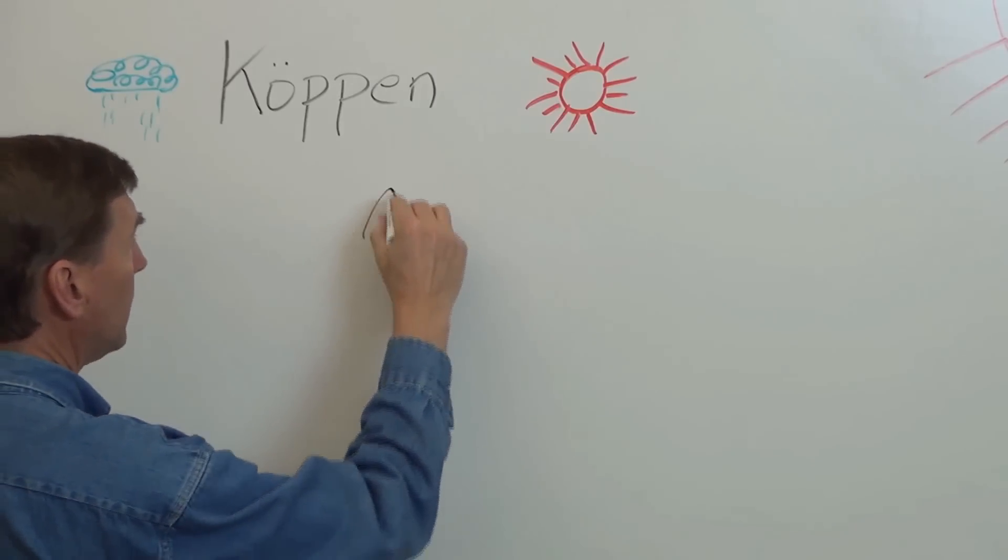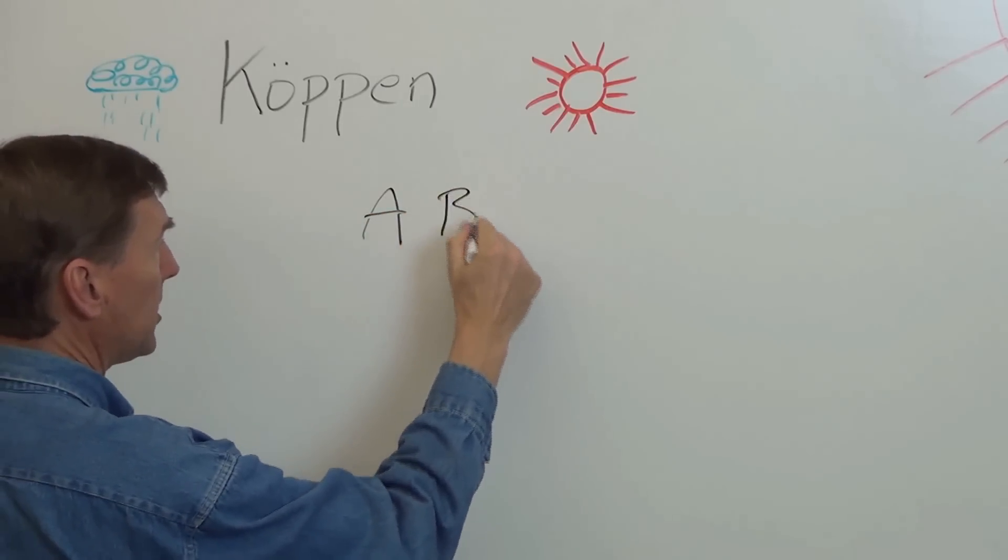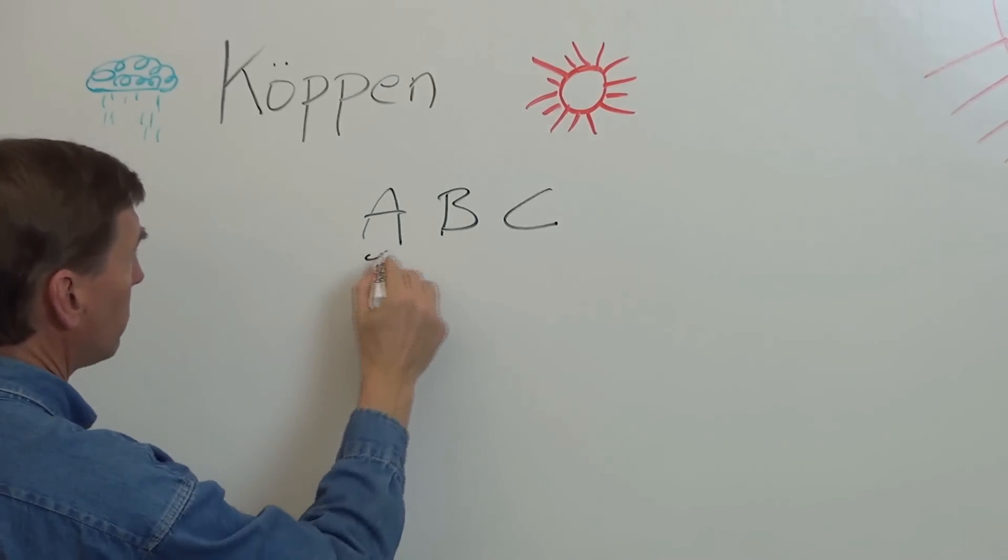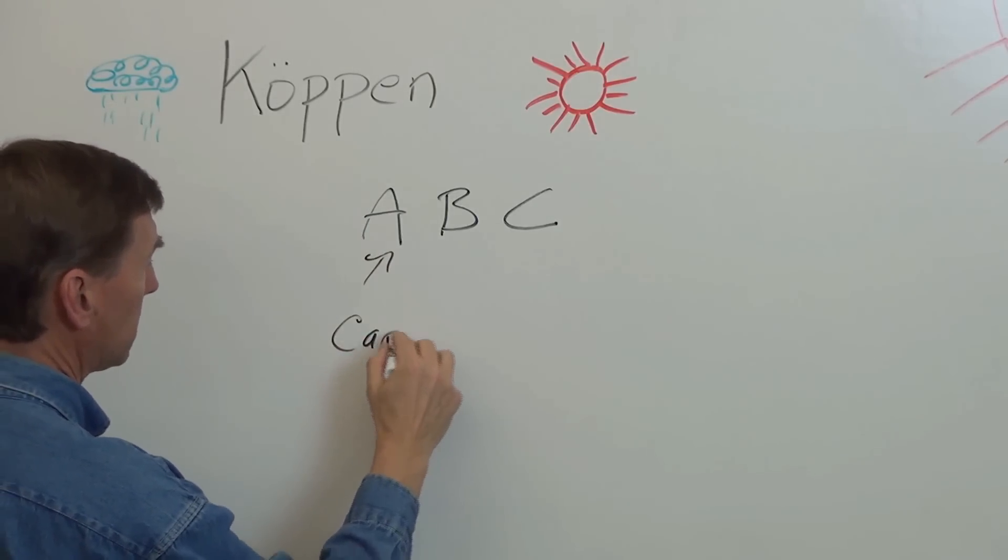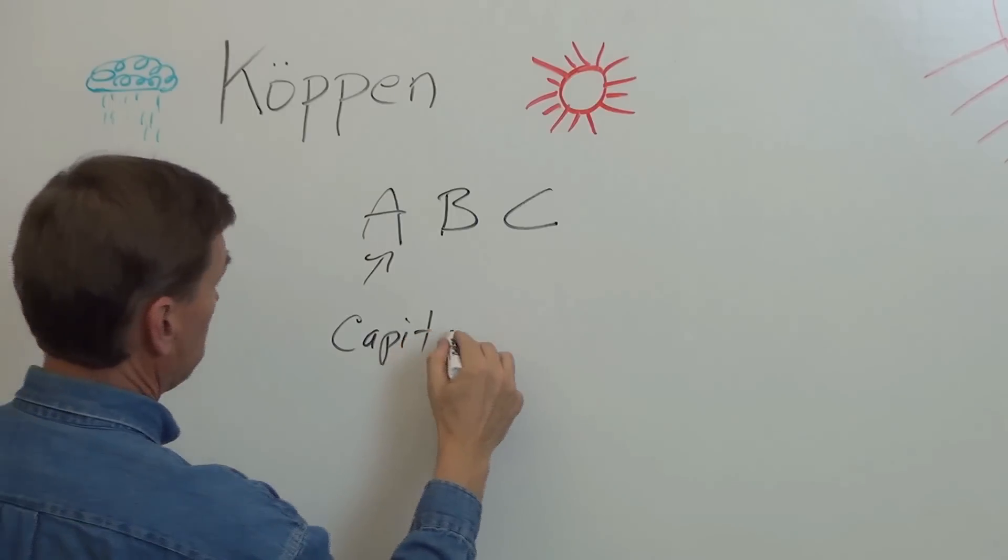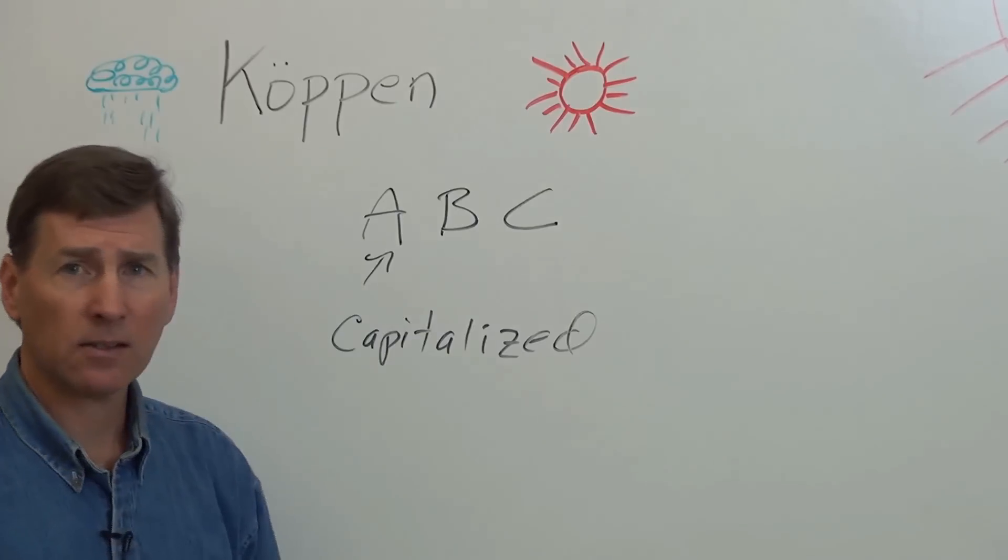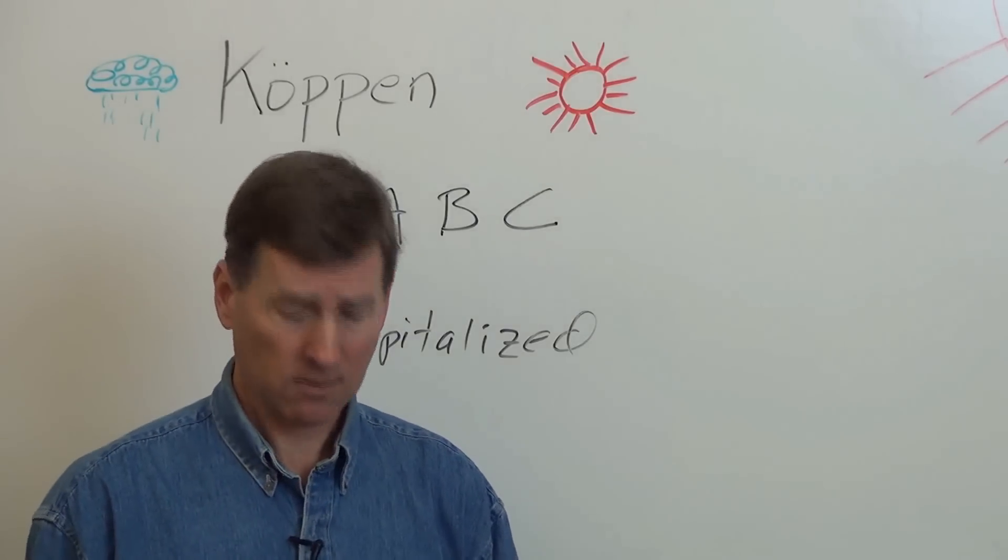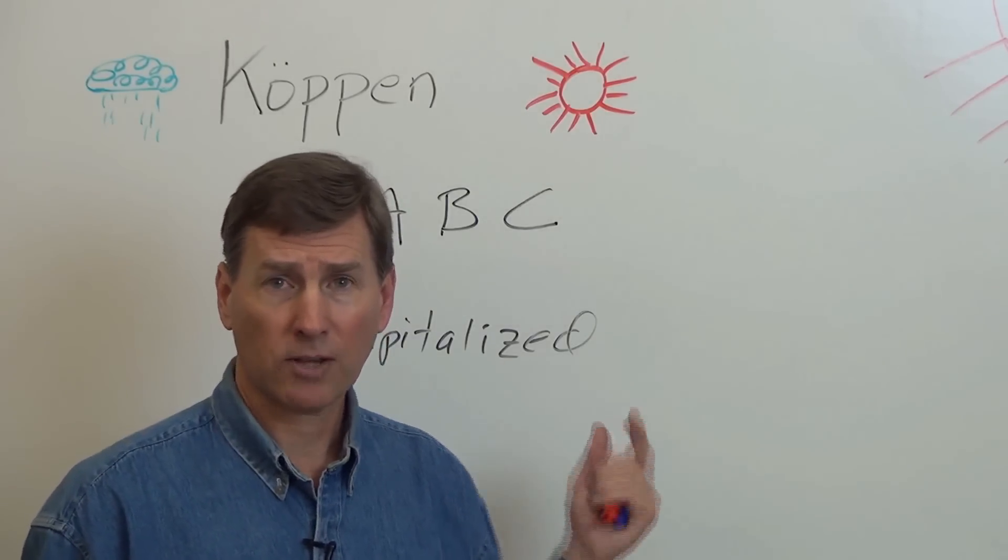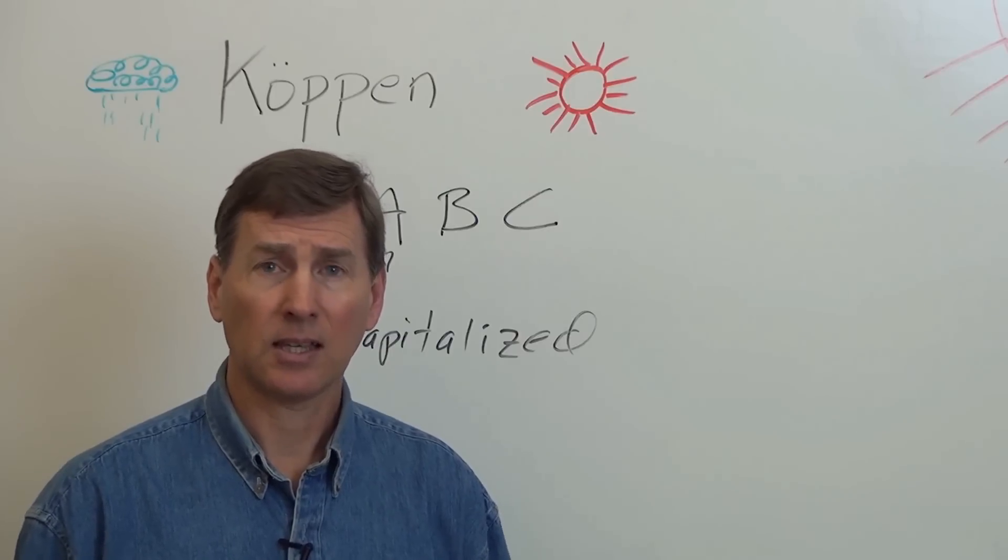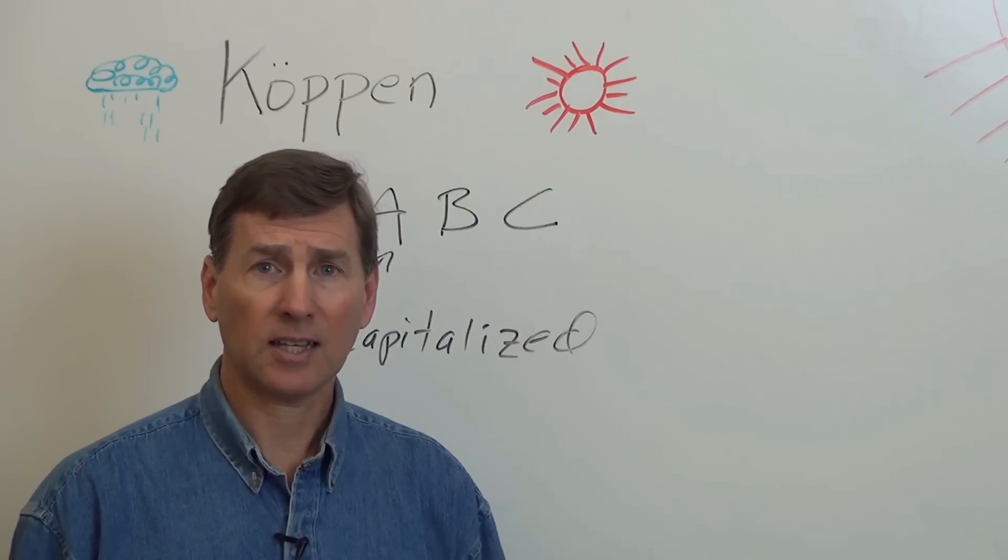First of all, you've got an A or a B or a C all the way up to E. This first letter is capitalized and it is basically the general climate. So for example, A is tropical, B is desert, C is temperate, D is severe, and then E is polar.